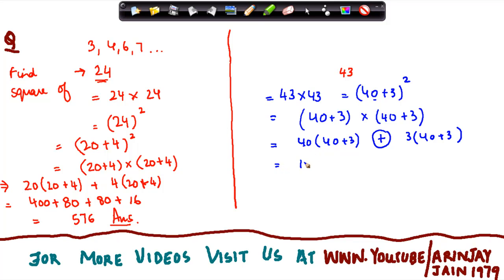So 4 times 4 gives me 16, and I put in two zeros here. 3 times 4 gives me 12, I put in one zero here. 3 times 40 again the same number, and 3 times 3 gives me 9.